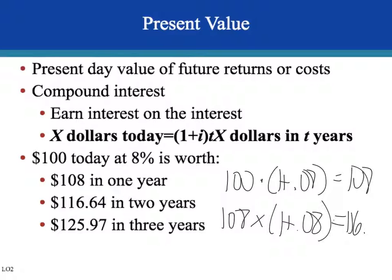In year 2, we're going to earn 8% interest not only on the original $100, but also on the $8 interest we earned in the year before — so we get $116.64. Then in year 3, we earn 8% interest on the $116.64, and we get $125.97, and so on.